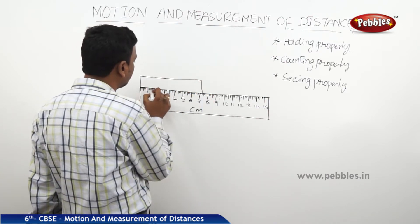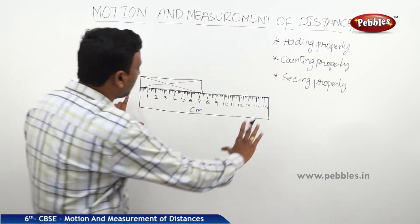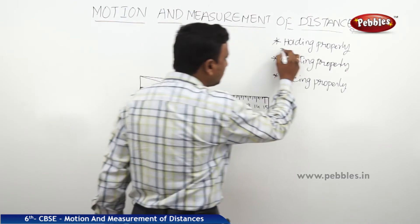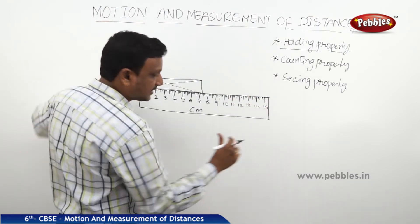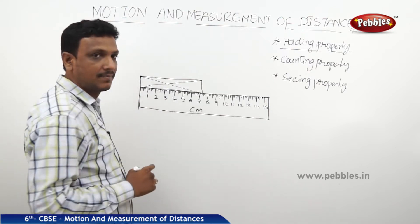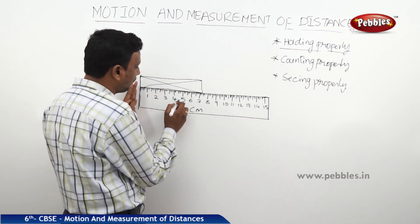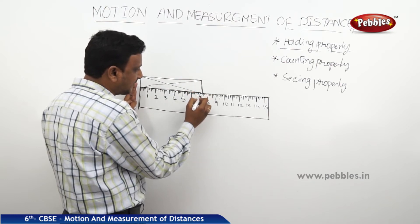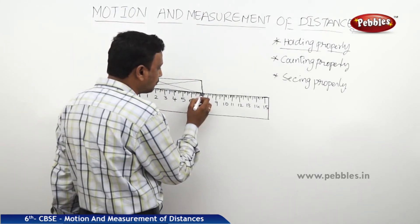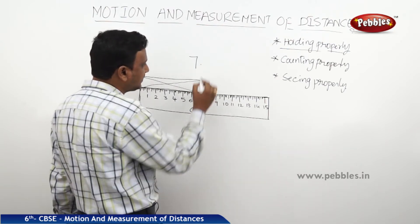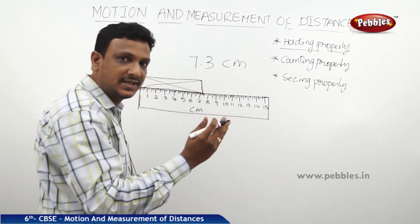Say you have a box and want to measure its length. Place the scale along the edge of the box, making sure the scale is aligned straight — not tilted. The edges of the box and the scale should be aligned properly. Then count the centimeter markings: one, two, three, four, five, six, seven. If it crosses seven and reaches three small divisions past it, the measurement is 7.3 centimeters.